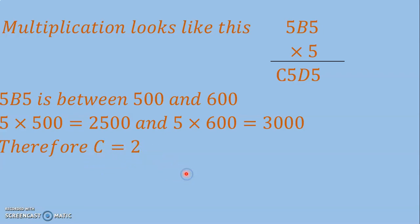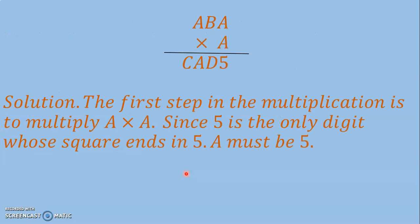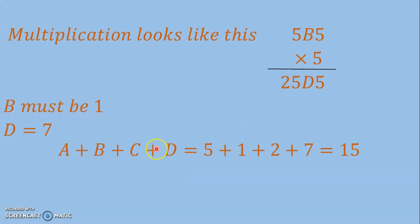The multiplication looks like this: 5B5 × 5. Replacing the value of C, we get 25D5.